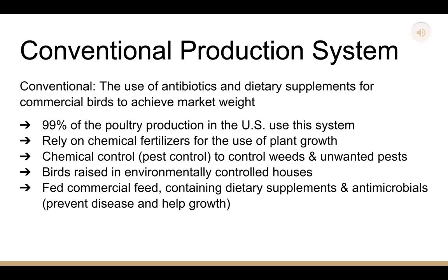Next, we have the conventional production system. Conventional means it involves the use of antibiotics and dietary supplements for commercial birds to achieve market weight. 99% of poultry production in the U.S. uses this system. This production system relies on chemical fertilizers for plant growth. Chemical control such as pest control is also used to control weeds and unwanted pests. Birds are raised in environmentally controlled houses and feed off dietary supplements and antimicrobials, which prevent disease and help growth.